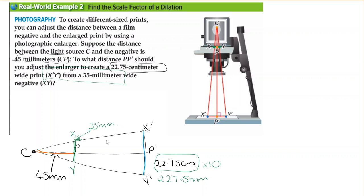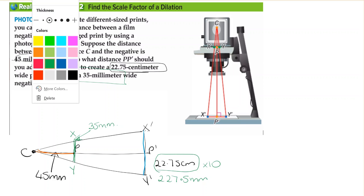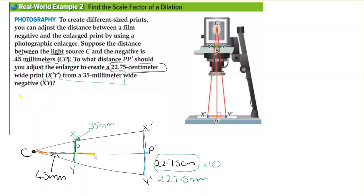The question is asking what distance do we need this length to be for this to be 227.5 millimeters if we have 35 millimeters here. We need to work it out. First, we're looking at ratios and finding the scale factor. Step one: find the scale factor.